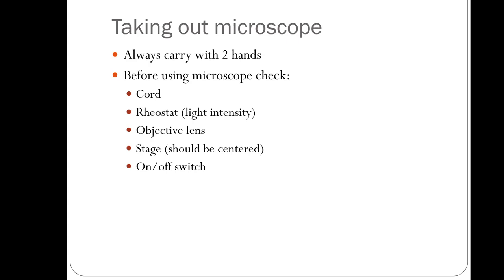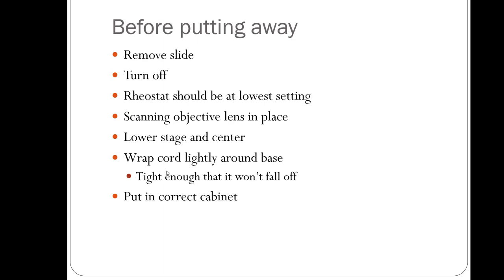When taking out a microscope, always carry it with two hands — fingers in the back of the neck and the other hand under the base. Before using it, check that the previous user put it away correctly: the cord should be wrapped around the base, the rheostat at the lowest setting, the scanning lens should be in place, the stage centered (not sticking out front or back), and the on/off switch off.